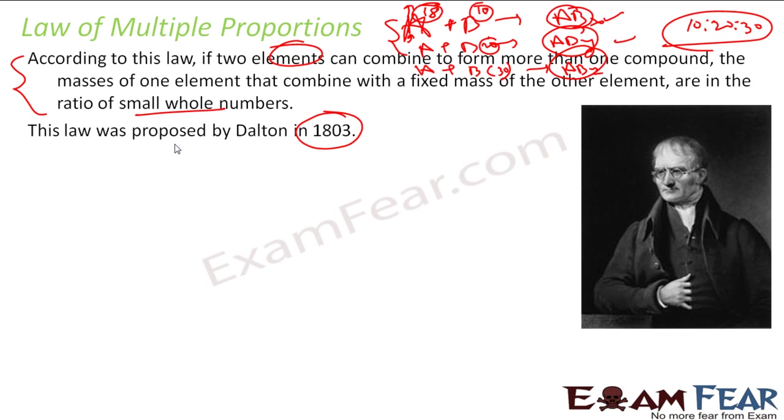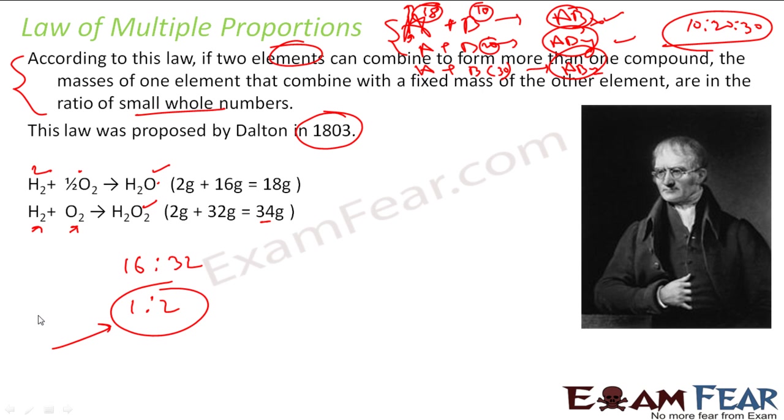You see the example for this. You have hydrogen and oxygen. It reacts to form water and hydrogen peroxide. In both cases my hydrogen and oxygen is there. In first case my 2 grams of hydrogen is reacting with 16 grams of oxygen to give 18 grams of water. In second case my 2 grams of hydrogen is reacting with 32 grams of oxygen to give 34 grams of H2O2. But if you see the ratio of oxygen, this guy is 16 in first case and this guy is 32. This is nothing but 1 is to 2. This is a whole number ratio. And that is nothing but the law of multiple proportion.